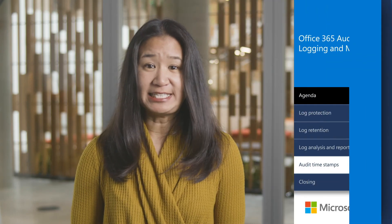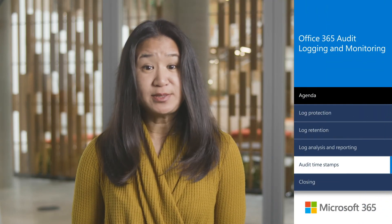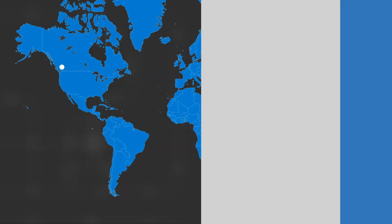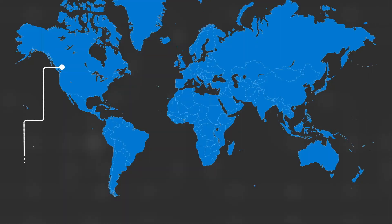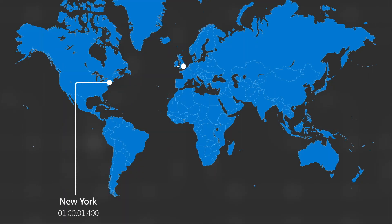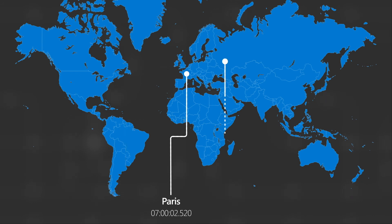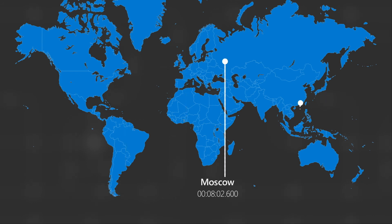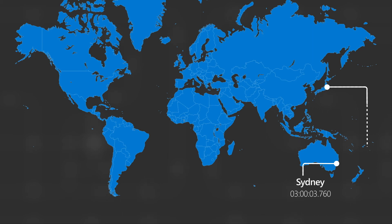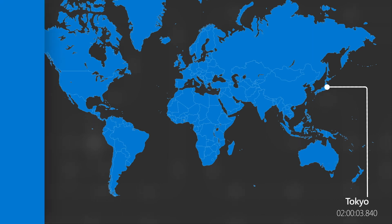Finally, the correct setting of computer clocks is important to ensure the accuracy of audit logs. Office 365 records timestamps that are mapped to Coordinated Universal Time, or UTC, and are precise to the millisecond.